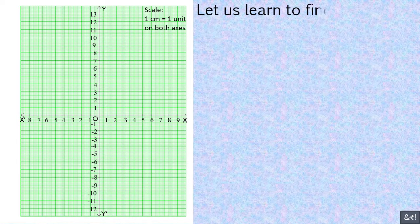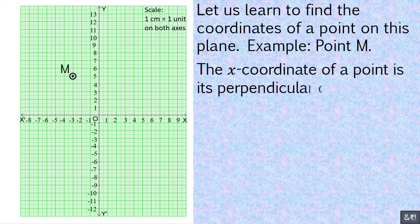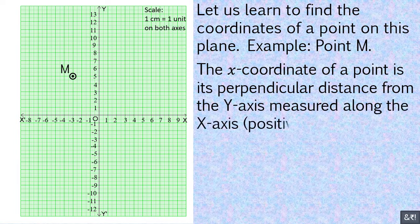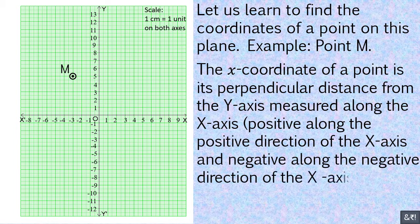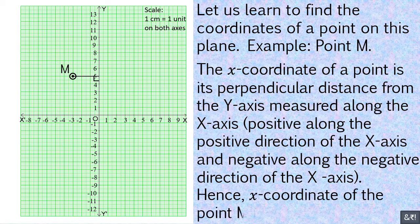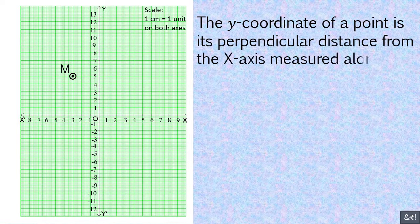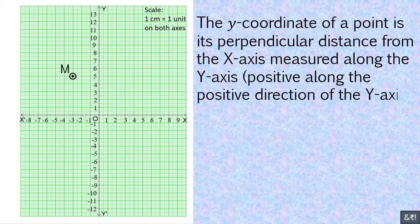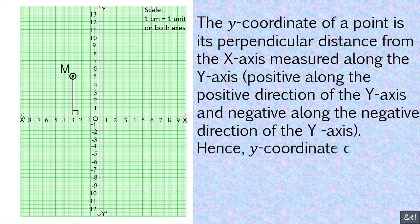Let us learn to find the coordinates of a point on this plane. Example: point M. The x-coordinate of a point is its perpendicular distance from the y-axis, measured along the x-axis — positive along the positive direction of the x-axis and negative along the negative direction. Hence, the x-coordinate of point M is −3. The y-coordinate of a point is its perpendicular distance from the x-axis, measured along the y-axis — positive along the positive direction and negative along the negative direction. Hence, the y-coordinate of point M is 5.